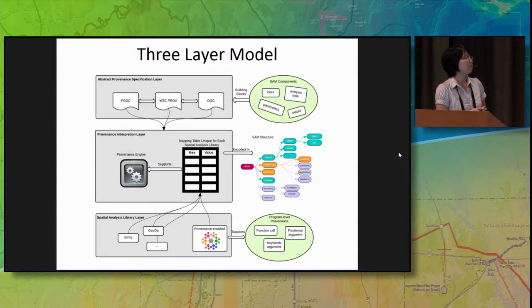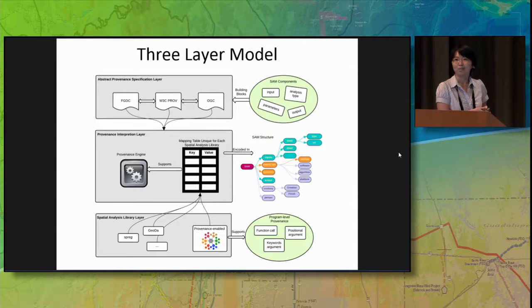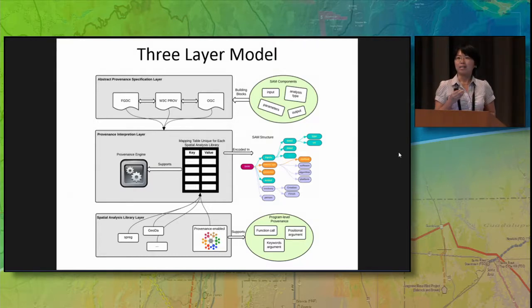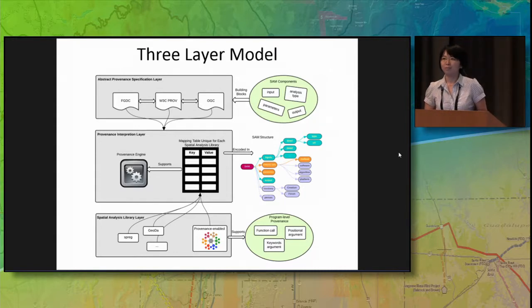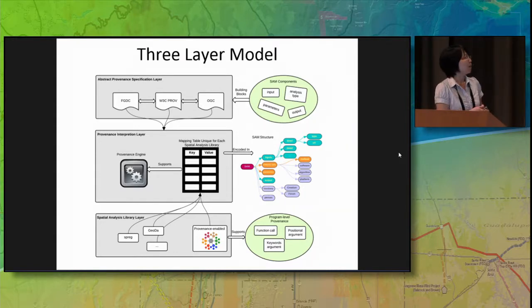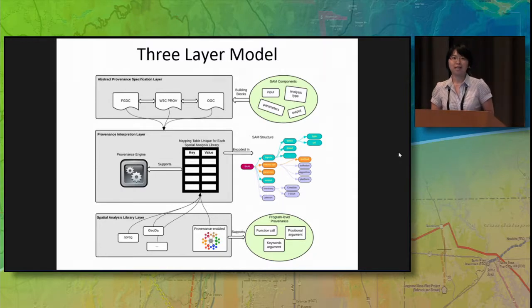When information is given, if some metadata has already been encoded in the same structure, the provenance engine can parse it, make interpretations, and automatically execute it in order to reproduce a result. So by the support of this engine, we hope that we can ensure science replicability.